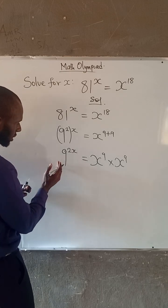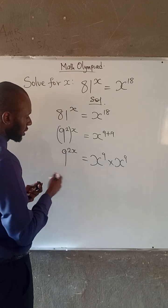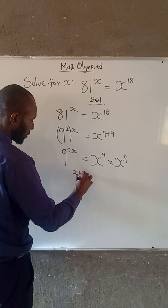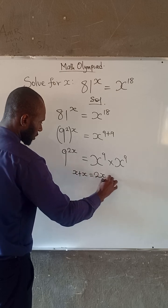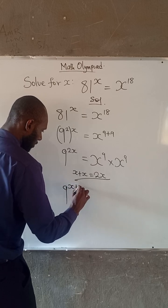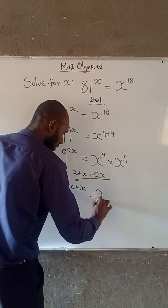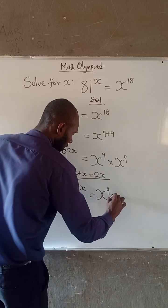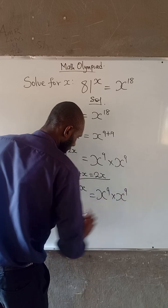So at the left hand side we have 2x here. Recall that x plus x is equal to 2x. So therefore, 9 to the power of x plus x is equal to 2 to the power of 9 times 2 to the power of 9.